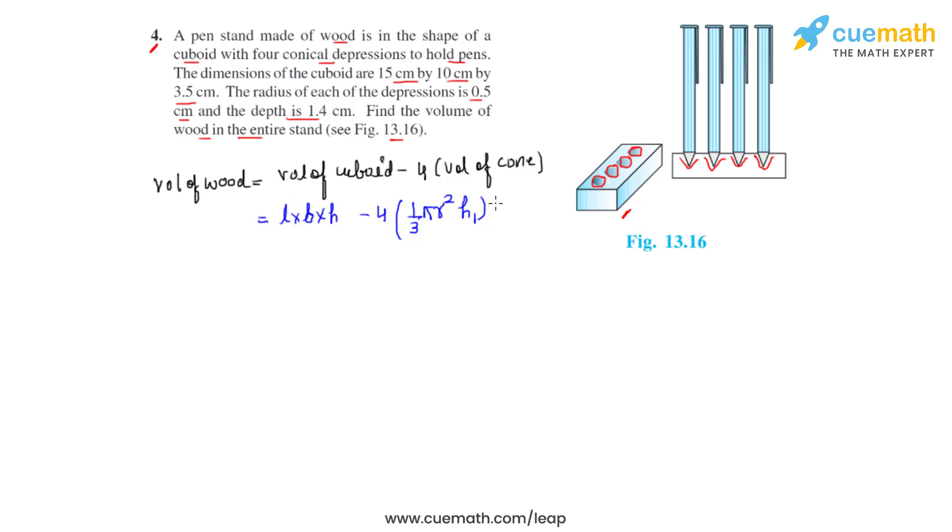So we'll first try to find out the volume of the cone. The cone looks like this, which has got a depth of 1.4 centimeters and the radius 0.5 centimeters.